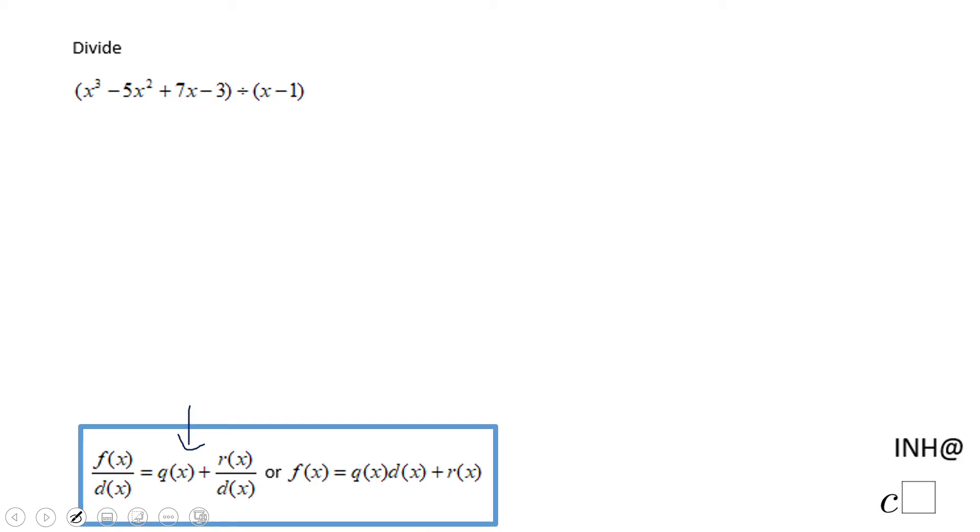Okay, so let's see how we do that. x cubed minus 5x squared plus 7x minus 3.